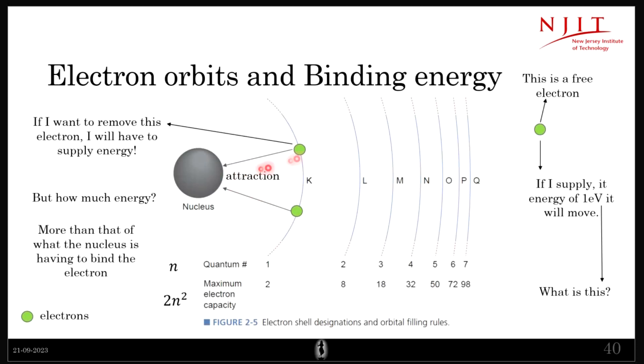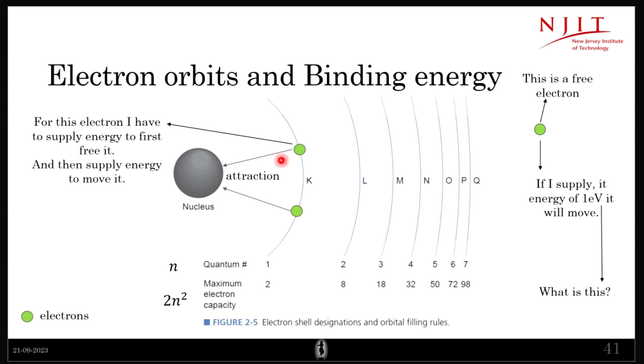Okay, so back to electron orbits and binding energy. If I supply one electron volt of energy to this particular free electron, it will move with a kinetic energy of one electron volt. But if I want to move this electron that is in the shell which is bound by the nucleus, then I will have to first supply energy so that I can bring it out of this bond, and only then I can move it freely.